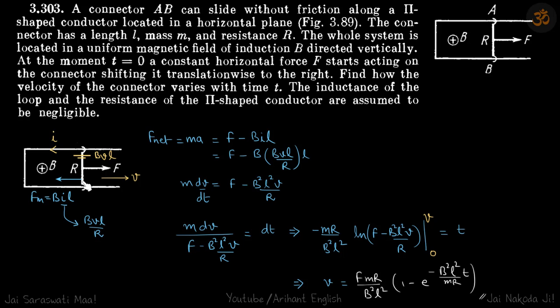And force on this rod, magnetic force on this rod will be BIL. Once again, if the velocity of this rod is V, EMF induced is BVL, current is BVL by R, and backward force is BIL.